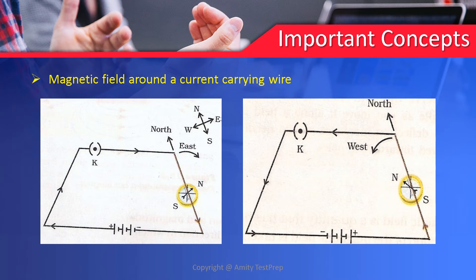Further, magnetic field around a current carrying wire — this can be explained using a compass needle. As is clear from the diagram, we have considered a wire connected to a battery and key, and the direction of electric current is represented here. When we bring a compass needle near the wire carrying current, we will notice some deflection in the needle, which guides us towards the direction of magnetic field. Two diagrams are shown here, representing the magnetic field around a current carrying wire by keeping the compass at different points around the wire.